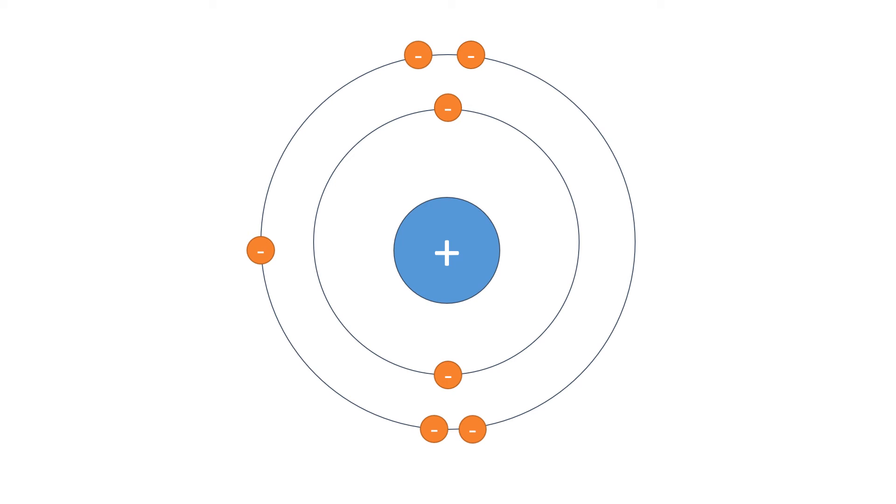Later experiments led to the idea that the positive charge of any nucleus could be subdivided into a whole number of smaller particles, each particle having a positive charge. The name proton was given to these particles.